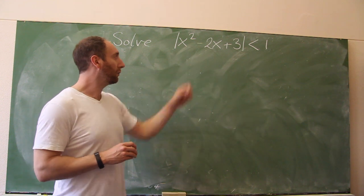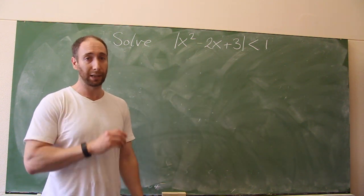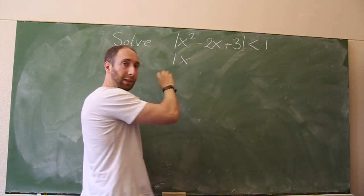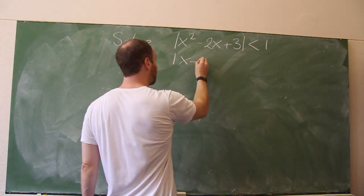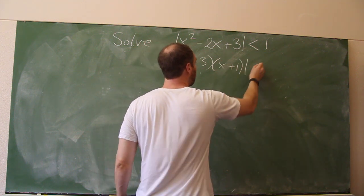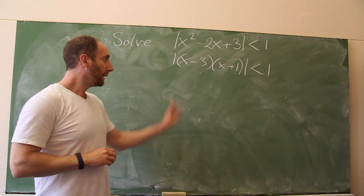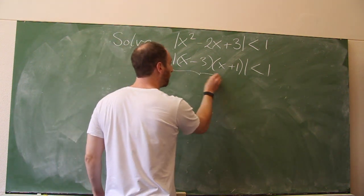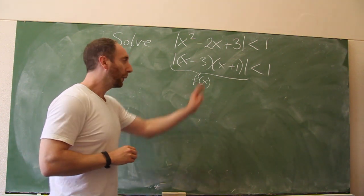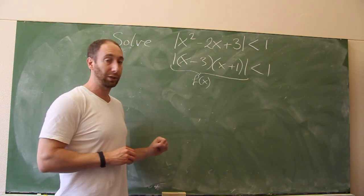In fact, the first thing we're going to do is factorise the quadratic. So this is equivalent to |( x − 3)(x + 1)| < 1. Now let's take this object and call it our function f(x). We're going to forget about the inequality for the moment and get back to that shortly.